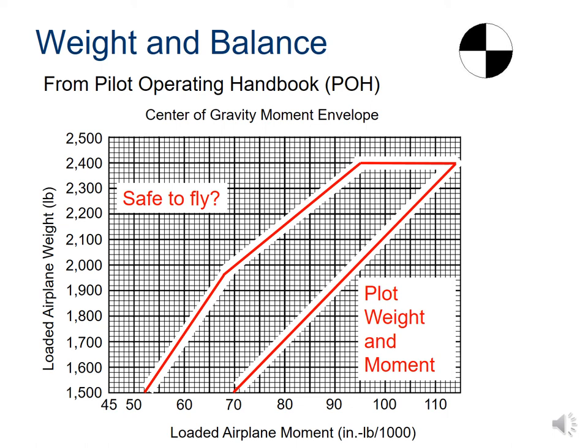Weight and balance calculations and adjustments are performed by the pilot or supporting ground crew and verified by the pilot. If the ground crew performs this task, then the information is delivered to the pilot on a piece of paper prior to closing the main cabin door. You may have found yourself in this situation on a small commuter aircraft where the flight attendant asks passengers to change seats — this is to adjust the weight and balance of the aircraft to a more ideal flight condition.